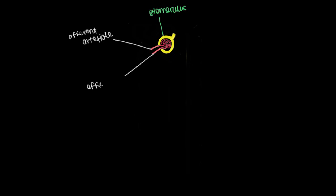This is called the efferent arteriole. Efferent, meaning going away from. And these are all talking about the glomerulus.